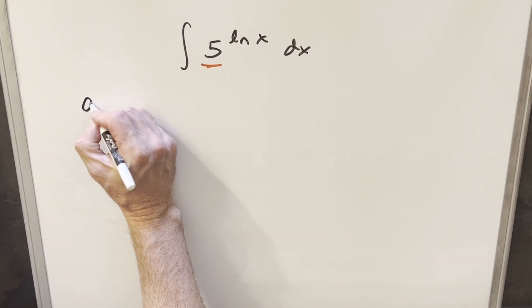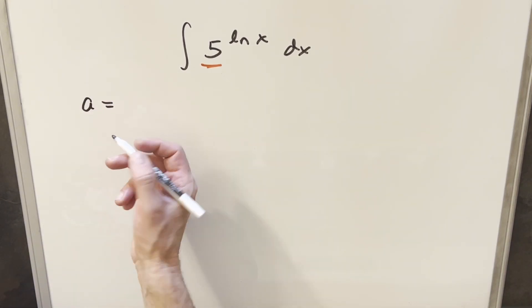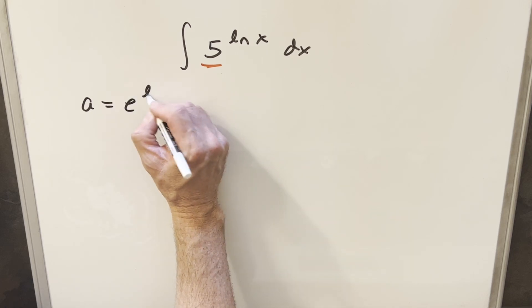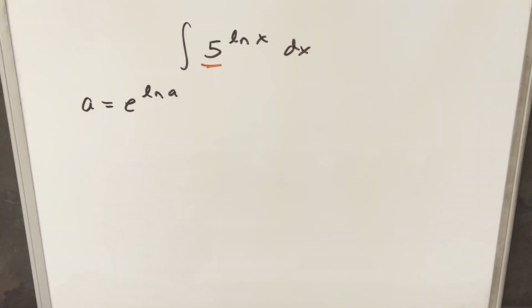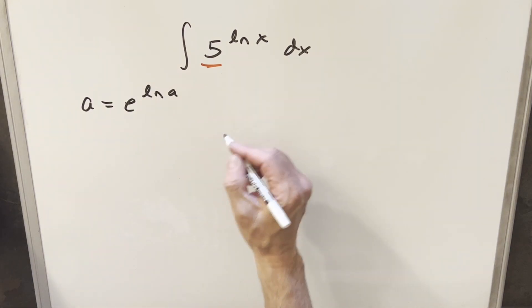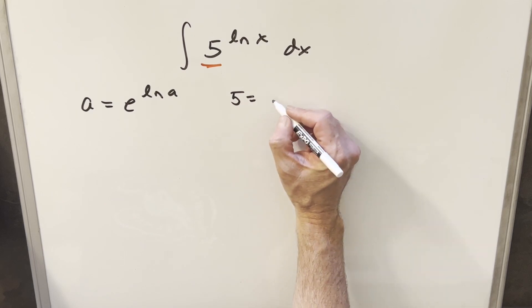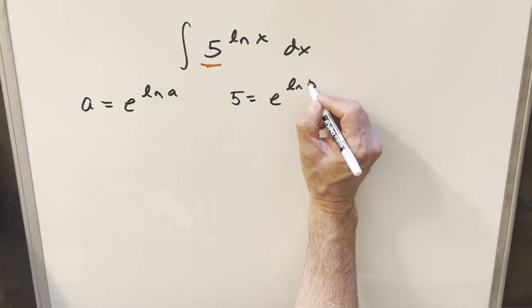What we can do is use this property that we can write a, for some constant value, as e to the ln a. So in this case for 5, we can actually rewrite 5 as e to the ln 5.